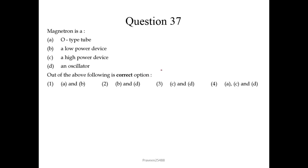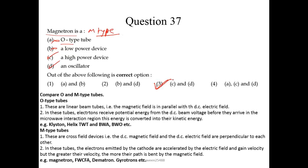Question number 37: Magnetron is — an O-type tube, a low power device, a high power device, or an oscillator? There are two types: O-type and M-type. Magnetron is an M-type tube, not O-type — so that statement is incorrect. It is also not a low power device; it is a high power device. So C and D are correct; the third option is correct. Examples of O-type tubes are klystron, LXTWT, BWA, BWO; M-type tubes include magnetrons, trimetrons, dynatrons, etc.